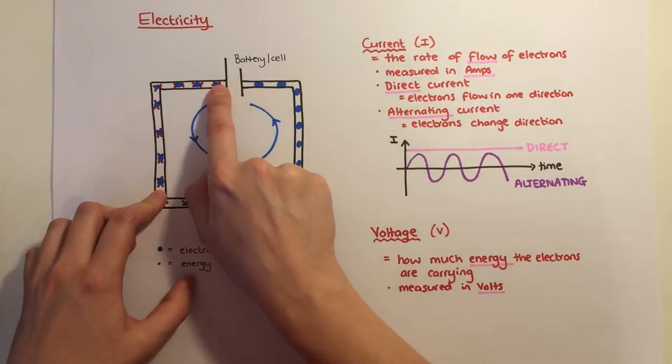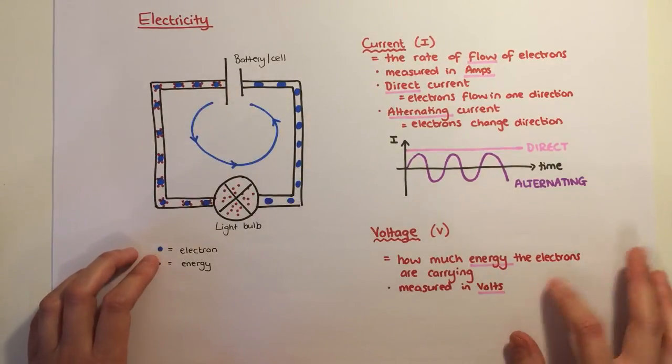The second definition is voltage, and that is about how much energy each electron is carrying, and that is measured in volts.